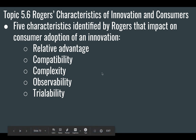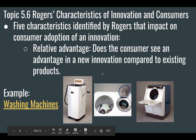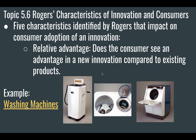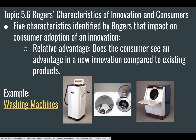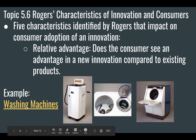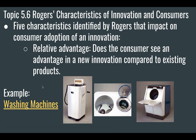The first characteristic is relative advantage — does the consumer see an advantage in a new innovation compared to an existing product? A good example is washing machines. There's a whole article about it you should read. Can you imagine doing your clothes by hand? The laboriousness, the amount of work it takes to wash them individually using a washboard or going down to a river and using rocks.